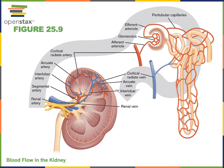Then the interlobar arteries branch to form arcuate arteries, and the arcuate arteries are located at the border between the renal cortex and the renal medulla. Then the arcuate arteries give off numerous small branches called cortical radiate arteries. Cortical radiate arteries are also known as interlobular arteries, but I prefer the term cortical radiate artery to avoid confusion with the interlobar artery.